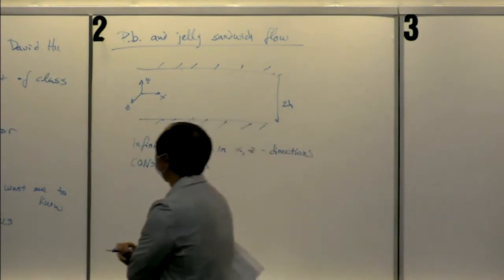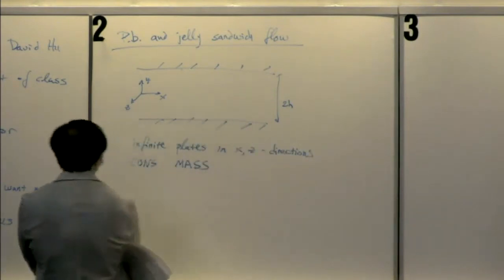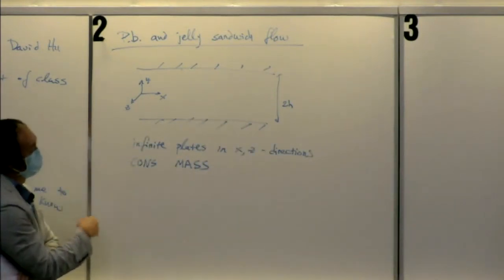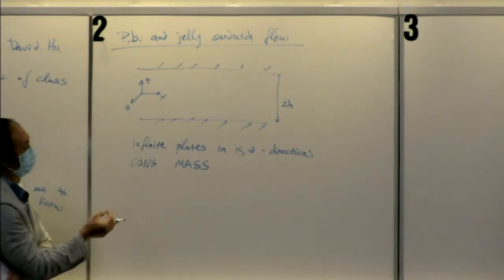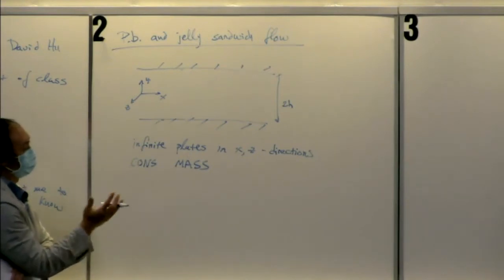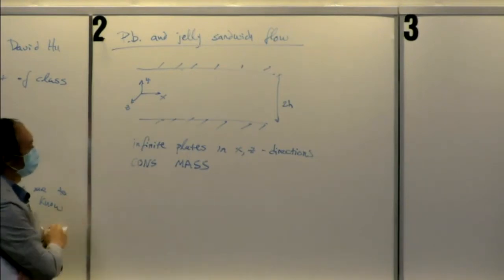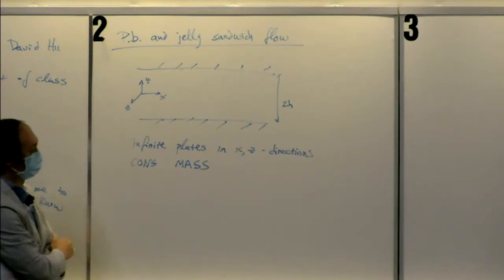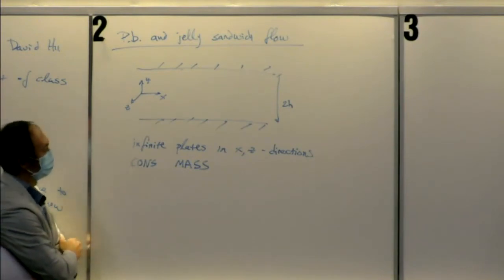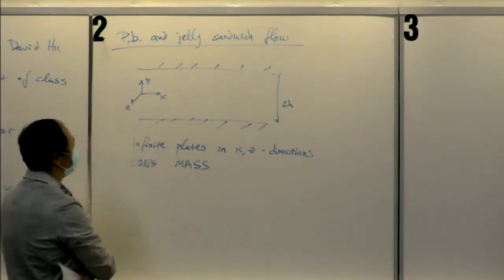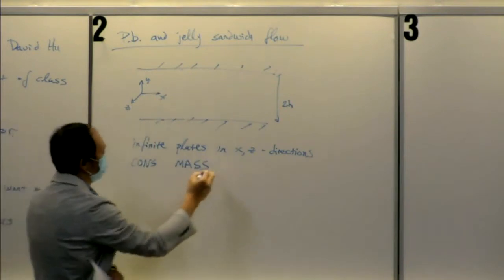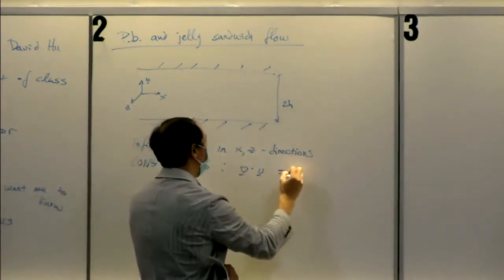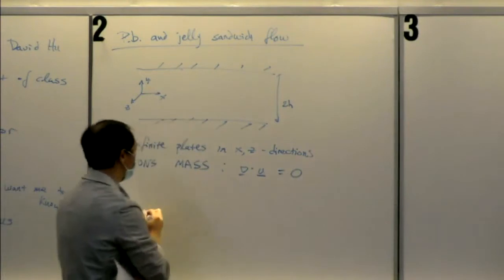Imagine you're like a bacteria in the middle of a peanut butter jelly sandwich. The bread is infinite in the x direction and the z direction, but the bread is a finite width apart — that's the y direction. Concentration of mass tells us there's a relationship between the velocities.